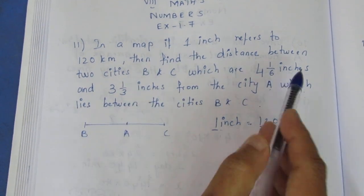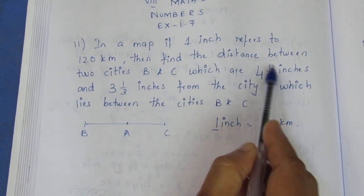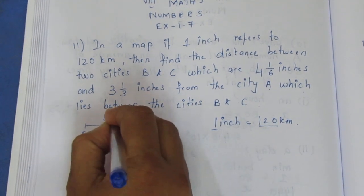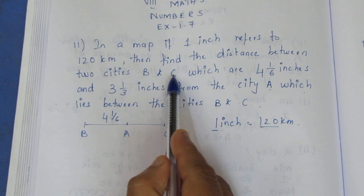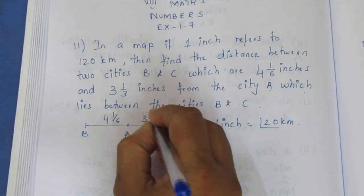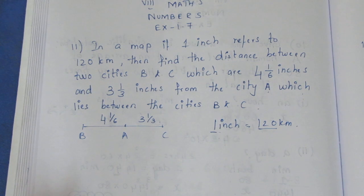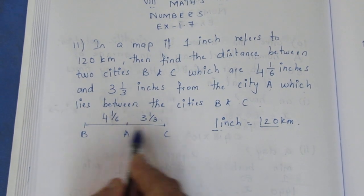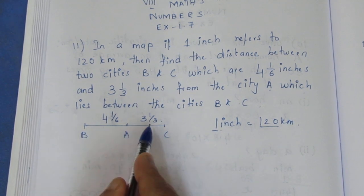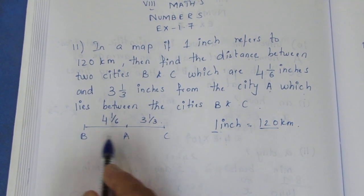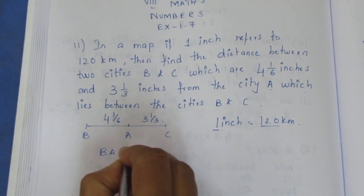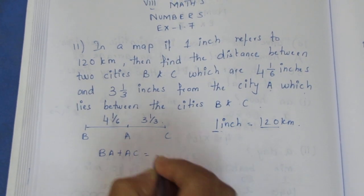So A is here, B is here. From A to B it is 4 and 1/6 inches. From A to C it is 3 and 1/3 inches. To find the total distance between the 2 cities in inches, we add them: BA plus AC.